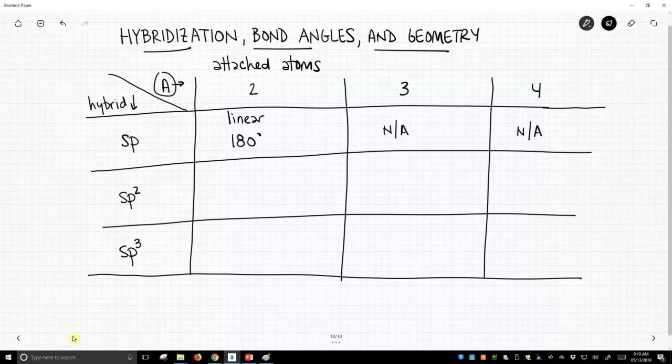Now let's go to sp2. If we have an sp2 hybridized atom with two attached atoms that will mean we have a lone pair getting a hybrid as well. Then we're going to have a bent molecule with a bond angle of 120 degrees.